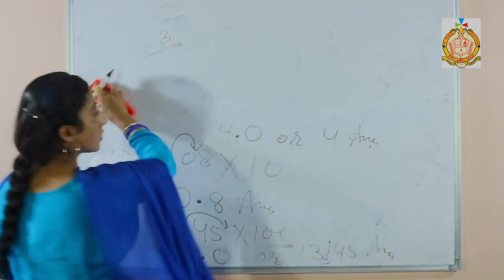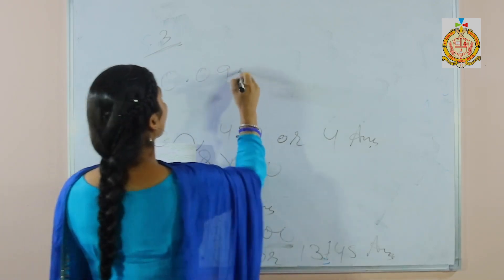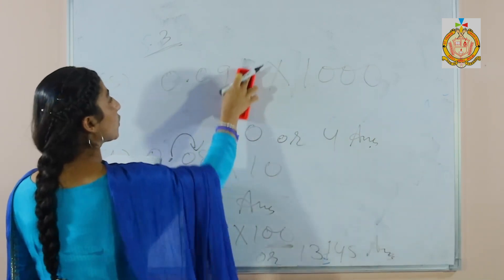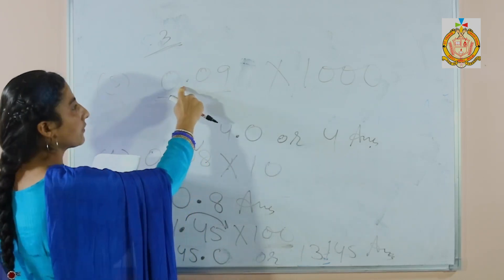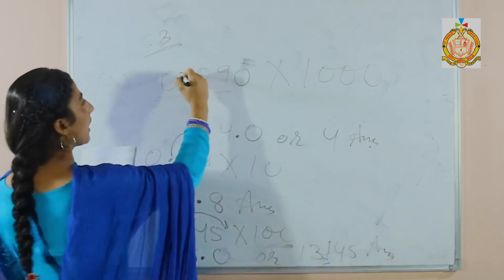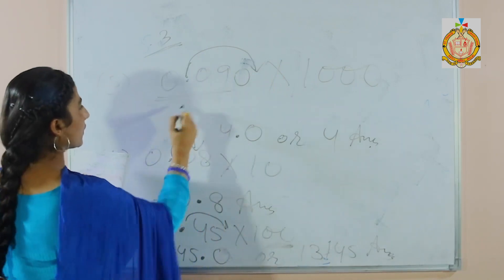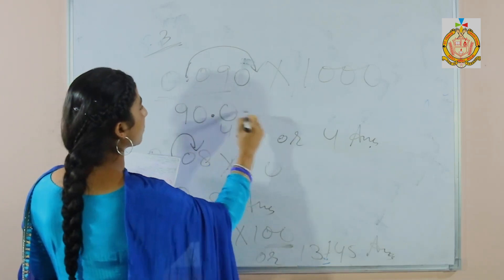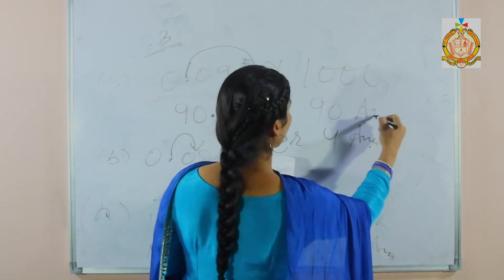Now part S: to multiply a decimal by 1000, then the decimal will be moved 3 places to the right. Students, see — in this sum only 2 places are there after the decimal, so to get 3 decimal places you can put a 0 here and then the decimal will be shifted. So your answer will be 90, and after decimal you can put 0, or just write 90.